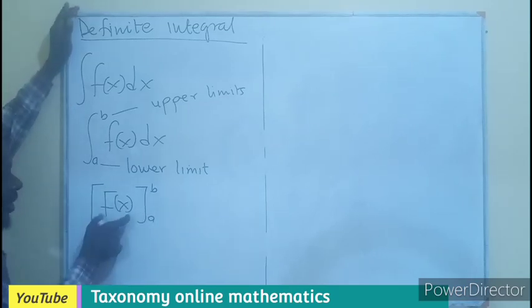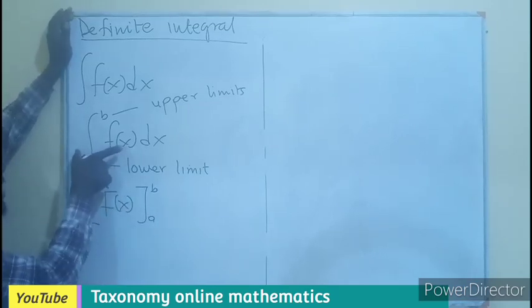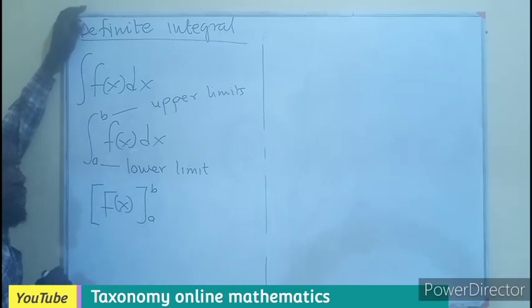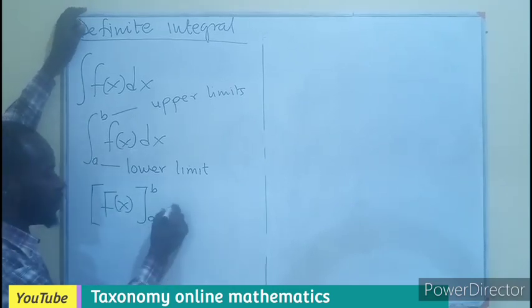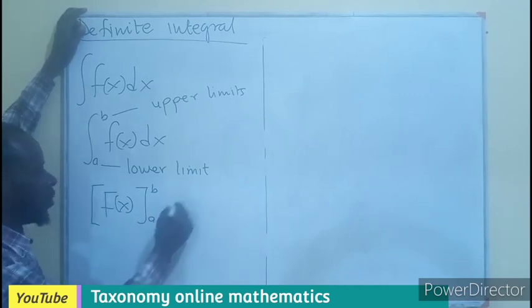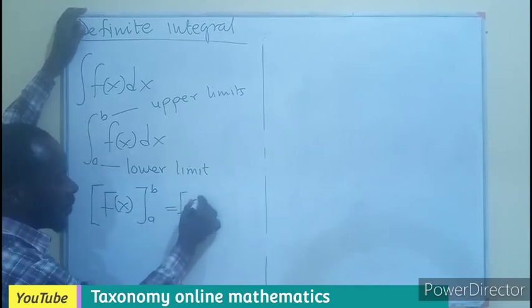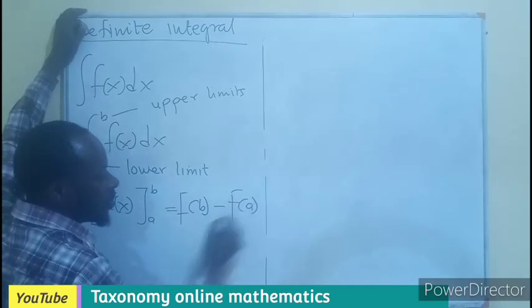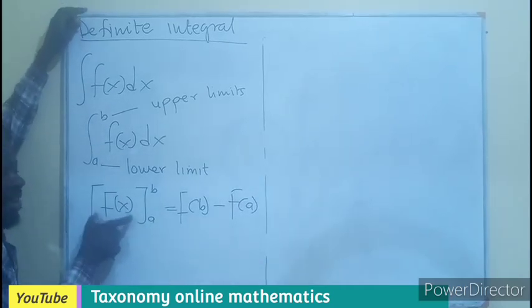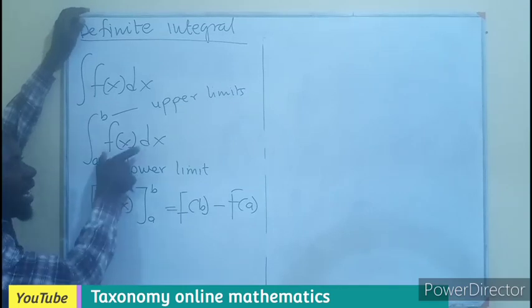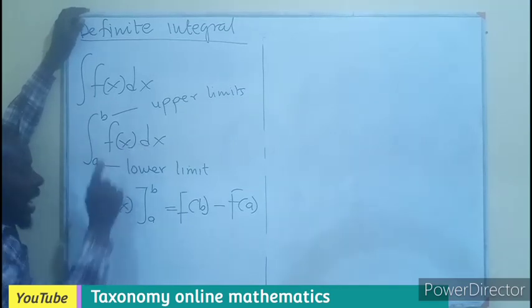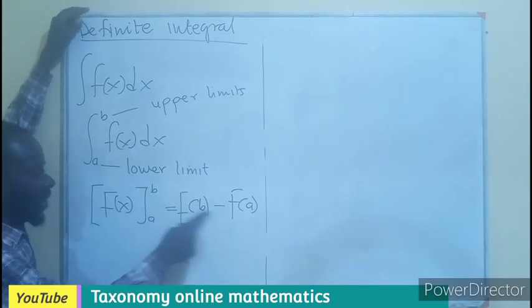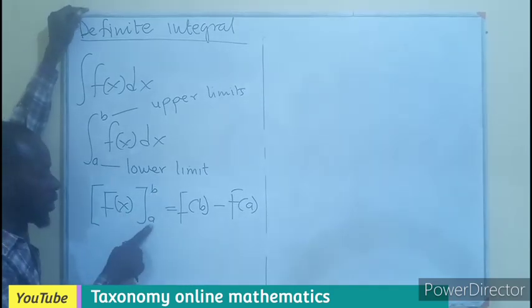So, it means this is the same as the integration of the value of function f of x. Then this can be further expanded to be f of B minus f of A. Meaning, whatever function that is left after the integration, the x value will be replaced with B minus the x value replaced with A, in order to find the actual value of that function given to us.